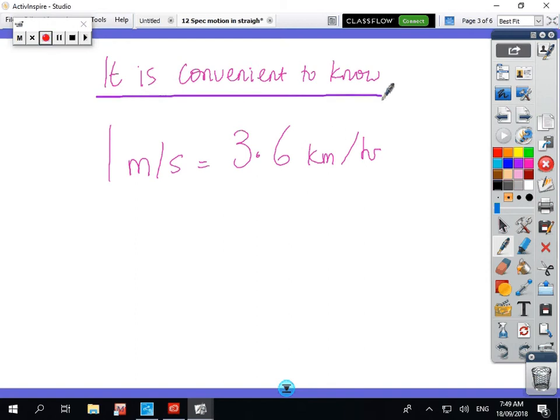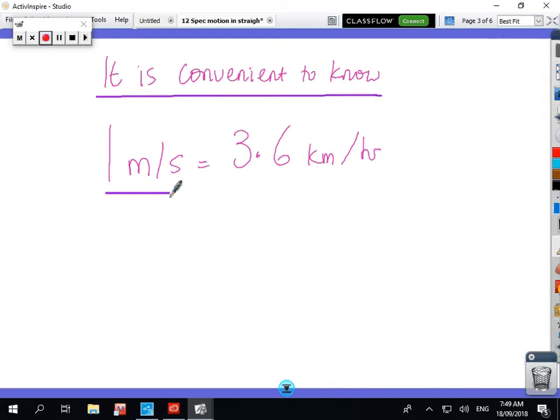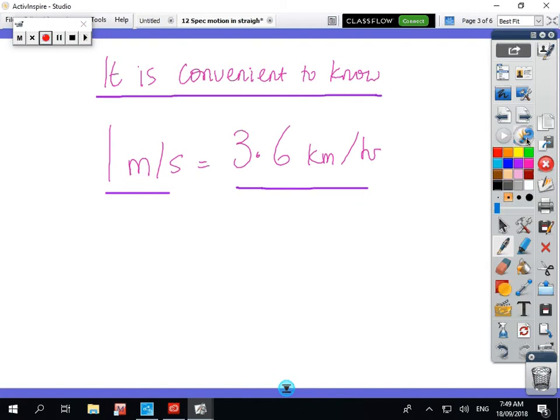And also, sometimes it's convenient to know that if you're moving at one metre per second, that's the same as 3.6 kilometres per hour. Okay, let's look across next example.